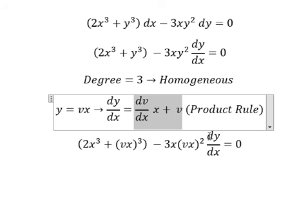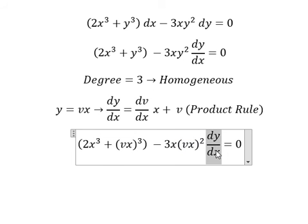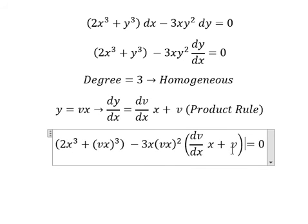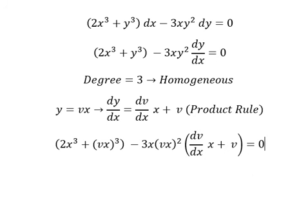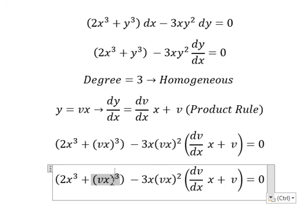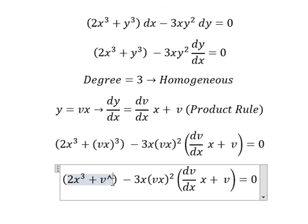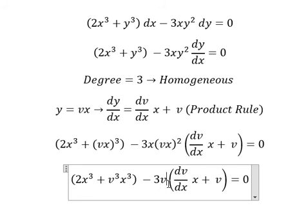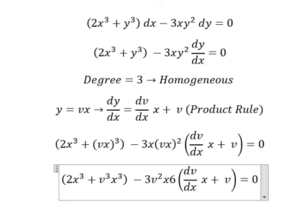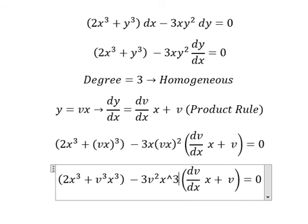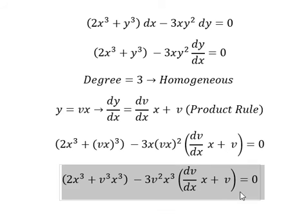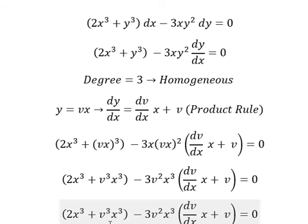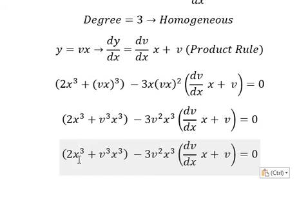This one gives us v to the power of 3, x to the power of 3, and this one gives us v squared, x to the power of 3. Now we need to simplify — divide both sides by x to the power of 3.